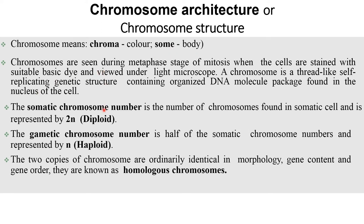Chromosomes are seen during the metaphase stage of mitosis when the cells are stained with a suitable basic dye and viewed under a microscope. A chromosome is a thread-like, self-replicating genetic structure containing an organized DNA molecule package found in the nucleus of a cell. The two copies of chromosomes are ordinarily identical in morphology, gene content, and gene order — they are known as homologous chromosomes.